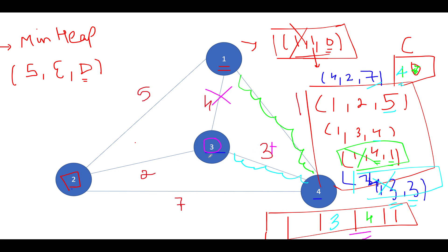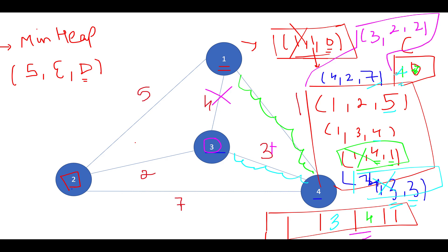Three is also connected to two by distance two, so we add (3, 2, 2) into the min-heap. The min-heap now has four elements: (3, 2, 2), (4, 2, 7), (1, 2, 5), and (1, 3, 4).